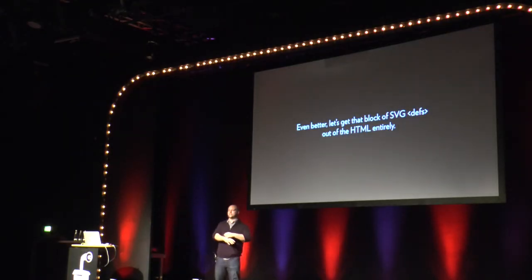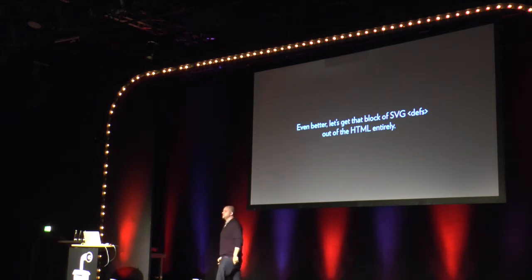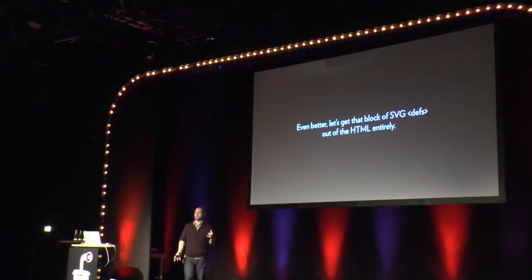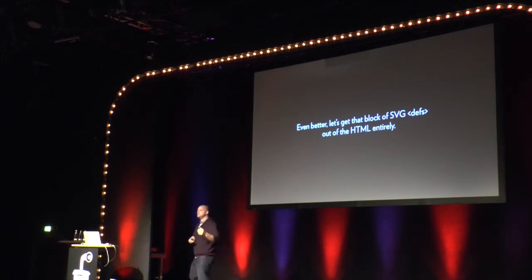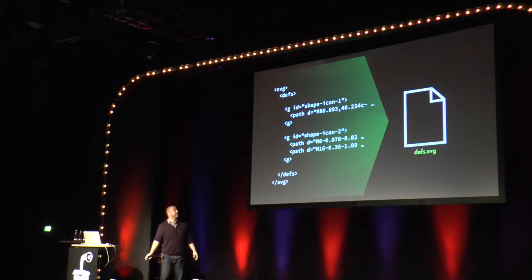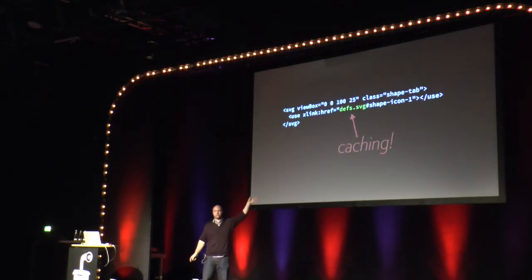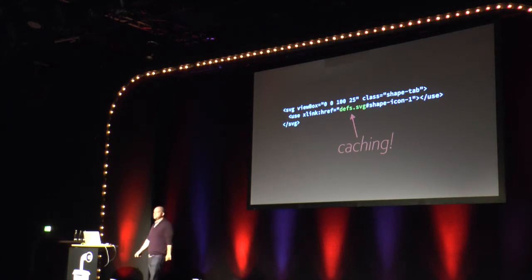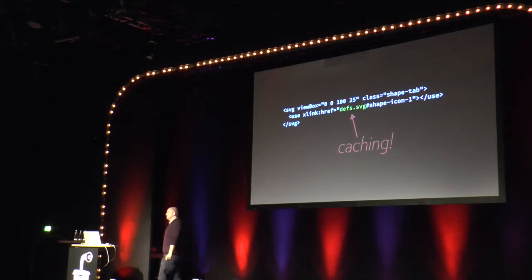Let's say you're GitHub and you have 800 icons. Taking that big chunk of SVG and putting it in the HTML document on every single page is a little inefficient — it doesn't make good use of browser caching and might bloat your page. Let's take that chunk of SVG and move it out to an external file called something like defs.svg. Then when you use it, link to that file with the ID on it. That way it's cached if things are set up correctly, which is cool.